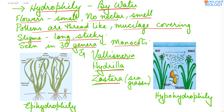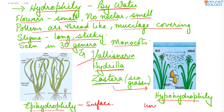Pollination by water is of two types: epihydrophily and hypohydrophily. Epihydrophily means pollination occurs at the surface of the water, seen in Vallisneria. While in Zostera, pollination occurs under the water — that is hypohydrophily. Most aquatic plants, leaving these 30 genera, carry out pollination either by wind or by insects.